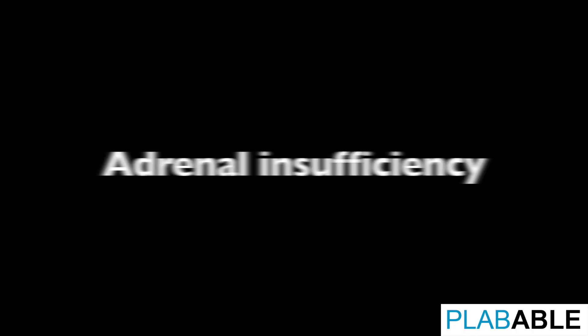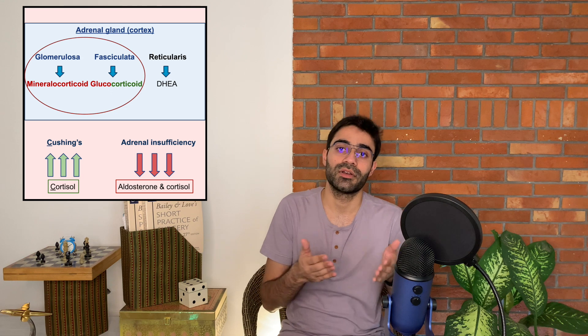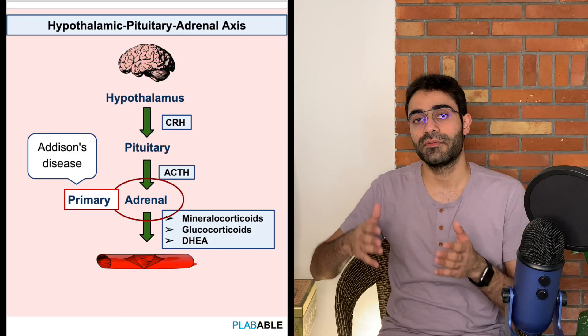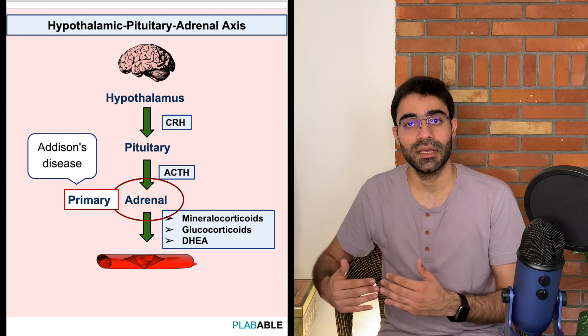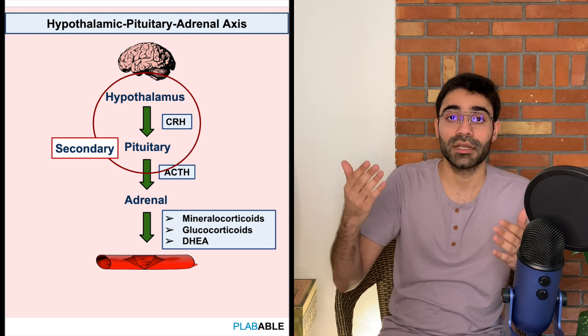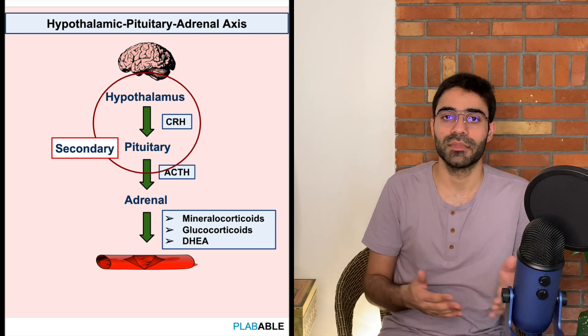Moving on to our next topic: adrenal insufficiency. As the name implies, the adrenal gland is not functioning properly, leading to reduced production of glucocorticoids and mineralocorticoids. Adrenal insufficiency can be primary, where the problem is at the level of the adrenal gland itself, or secondary, where the problem lies at the level of the hypothalamus or pituitary, leading to decreased ACTH production and hence decreased stimulation of the adrenal gland.